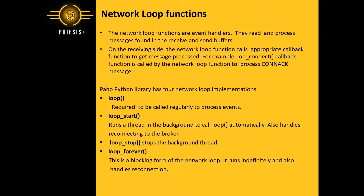Paho Python library has four network loop implementations. First, the loop function, which is required to be called regularly to process events. Second, loop start, which runs a thread in the background to call loop automatically and also handles reconnecting to the broker. Third, loop stop, which stops the background thread. Fourth, loop forever, a blocking form of the network loop that runs indefinitely and also handles reconnection.